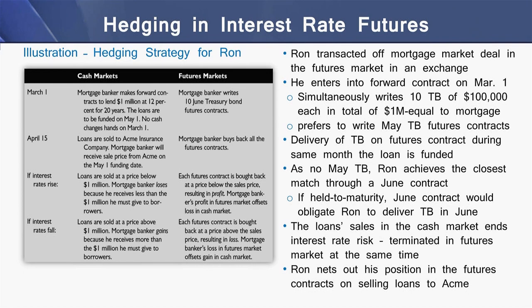We have two comparative markets: the cash market and the futures market. In the cash market, Ron transacts his mortgage deal, entering into a forward contract on March 1. Simultaneously, he is writing 10 Treasury Bond contracts of $100,000 each, totaling $1 million, equal to the whole value of the mortgage loan. Ron is writing May Treasury Bond futures contracts, with delivery during the same month the loan is funded. Since there are no May Treasury Bonds, the loan achieves the closest month, which is June, so he has a contract in June.